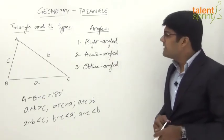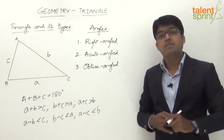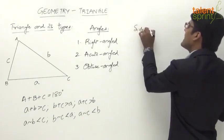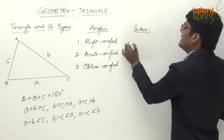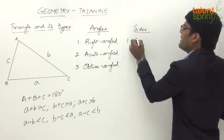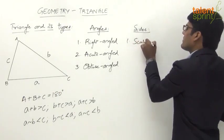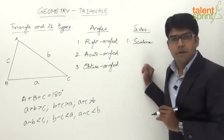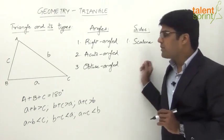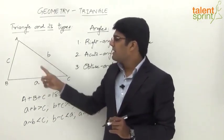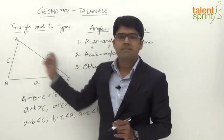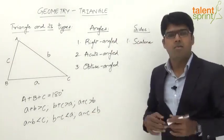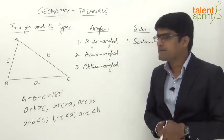There is another classification based on the sides of the triangle. The first type is a scalene triangle. In a scalene triangle, all three sides are different — a is different from b, which is different from c.